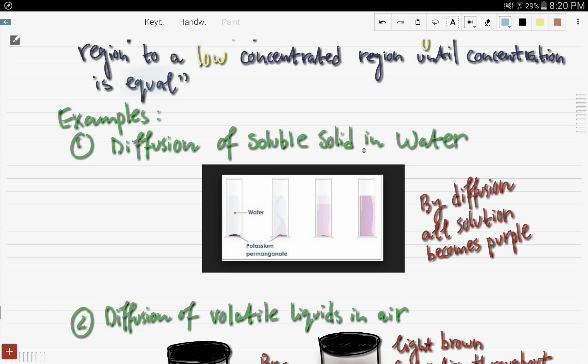So I'm going to provide two examples. Diffusion can occur in different states. First, we have the diffusion of a soluble solid in water. Here we have potassium permanganate, KMnO4. So when you put it in water, after some time by diffusion, all the solution becomes purple.